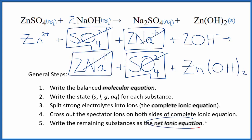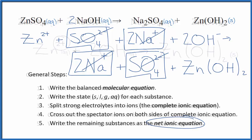What's left? That's the net ionic equation for ZnSO4 plus NaOH. I'll clean this up, write the states. We'll have our net ionic equation.